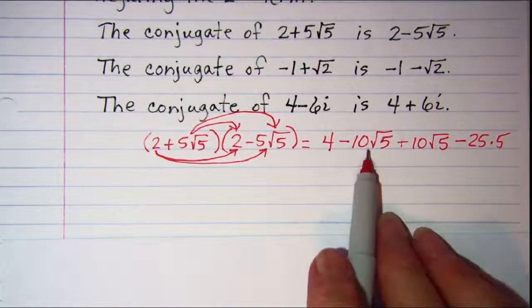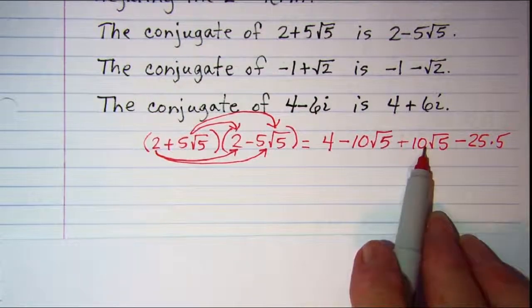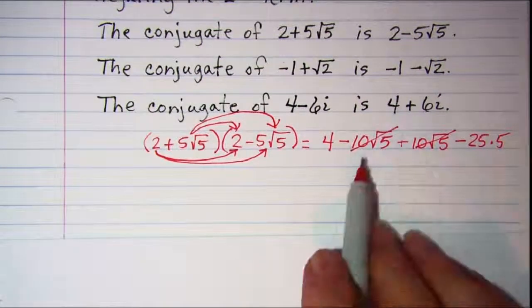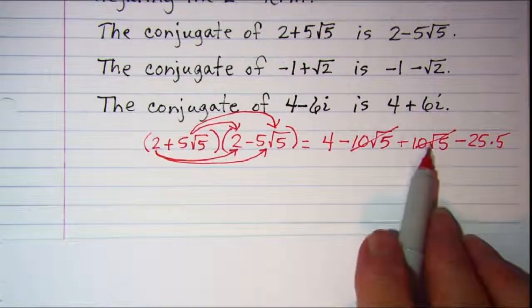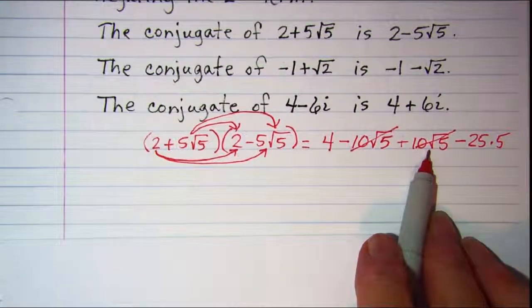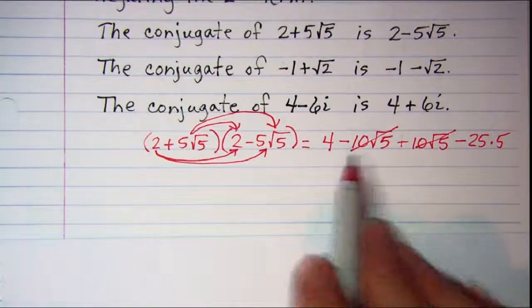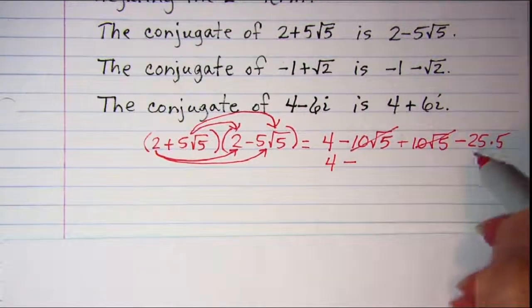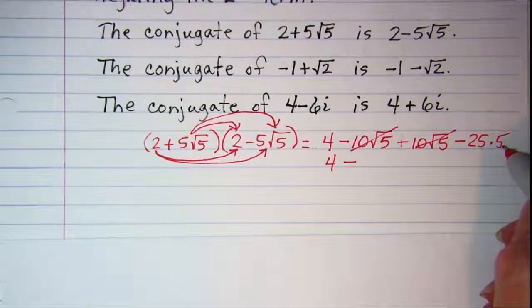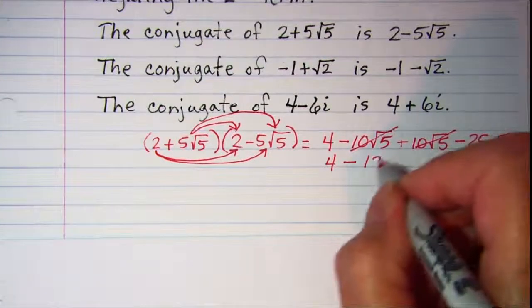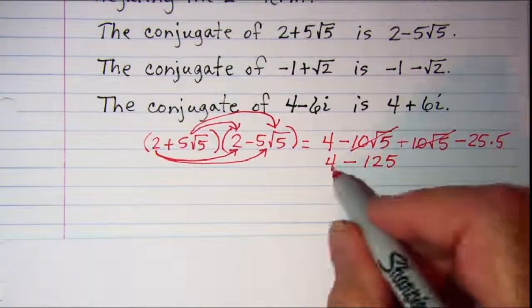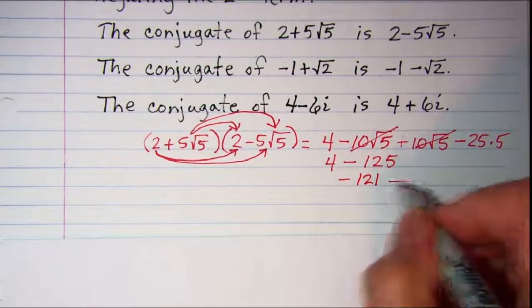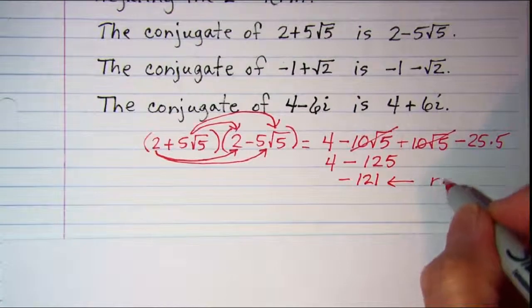And then 5 root 5 times negative 5 root 5 is negative 25 times 5. So you'll notice that when we multiply this using FOIL, the middle terms will cancel because this one is negative 10 root 5 and this one is positive 10 root 5. And all we need to do is take 4 and then minus 25 times 5 which is 125. 4 minus 125 is negative 121. So this now is a rational number.